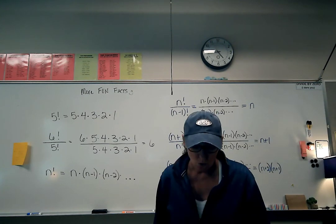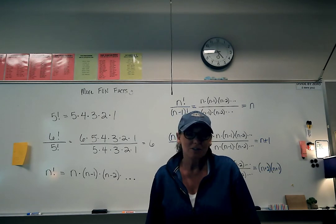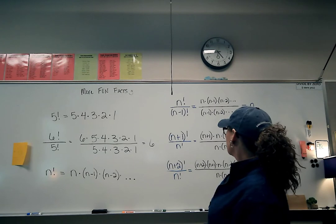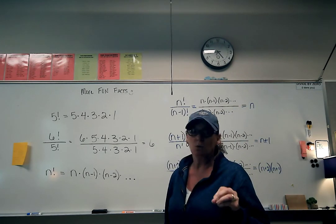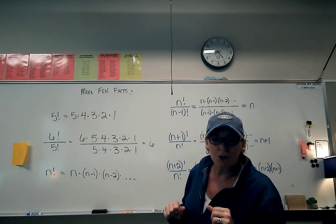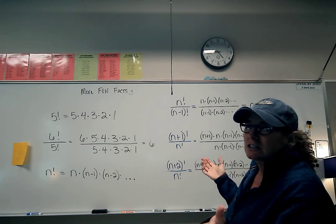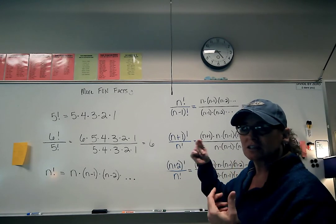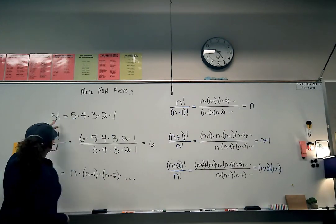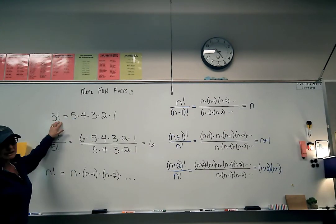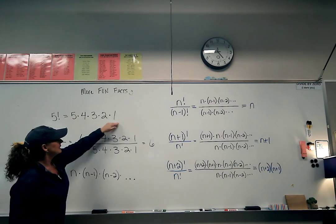Hey guys. This is a continuation of your notes for 10-4, so it's like 10-4 day two. Before we get started I have just three more things to write on your fun fact sheet. Don't worry, you don't need to copy everything that's on the board — just what's in blue. A reminder of what factorial means: five factorial means you start with five and you multiply by every number leading down to one.